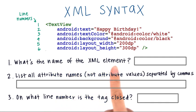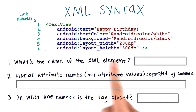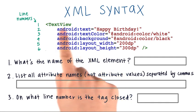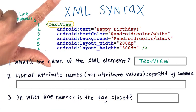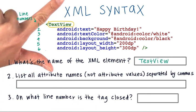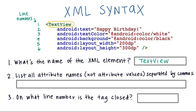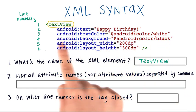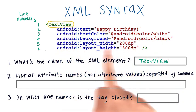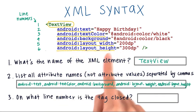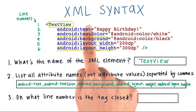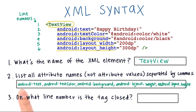The answer to the first question is that the XML element name is 'text view.' It follows the open angle bracket. Then all the attributes are below the XML element name. The attribute names are underlined here, on the left-hand side of the equals sign.